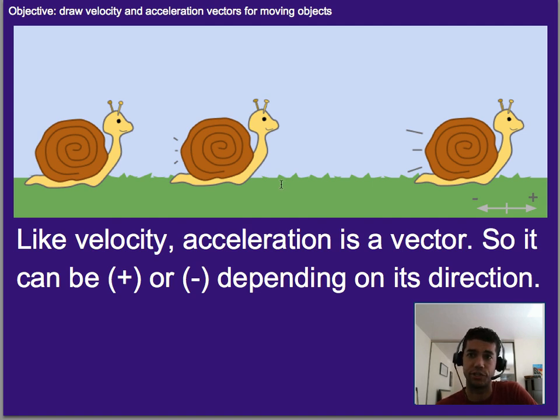So like velocity, acceleration is a vector. So that means it can be positive or negative. So in this case, we're going to call positive to the right and negative to the left. And that just kind of shows us direction.